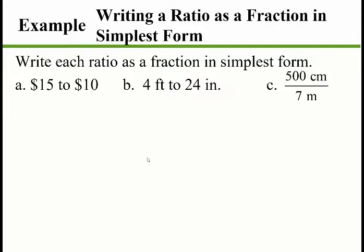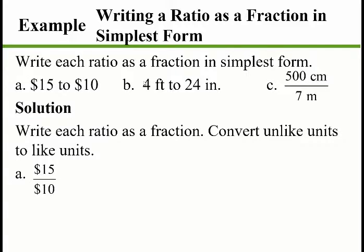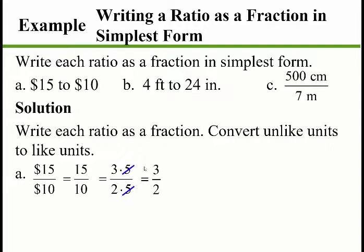Let's write each ratio as a fraction in simplest form. Pay attention to the units — here we have dollars to dollars, feet to inches, and centimeters to meters. First: $15 to $10. Cancel the units since ratios are unitless. Write 15 as 3 times 5 and 10 as 2 times 5; the 5s cancel, giving a ratio of 3 to 2.